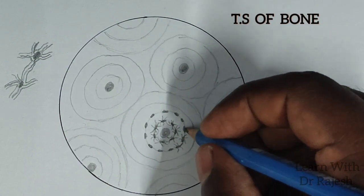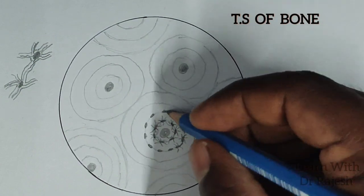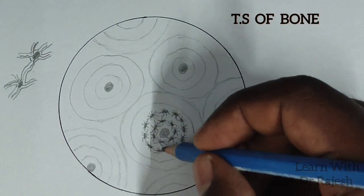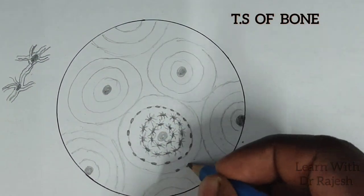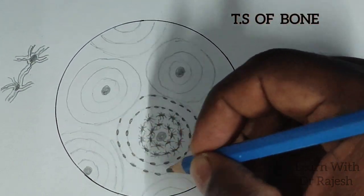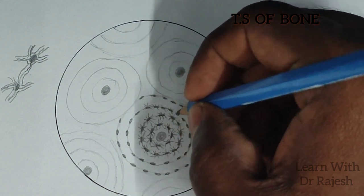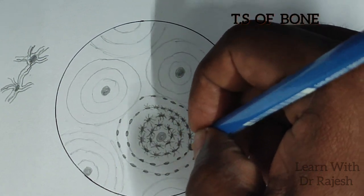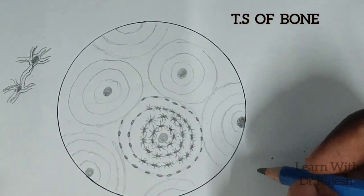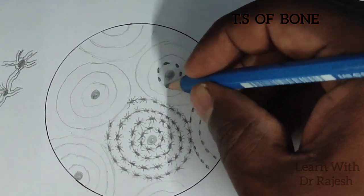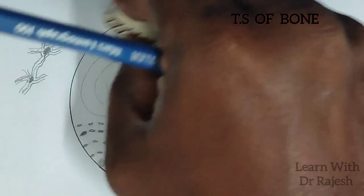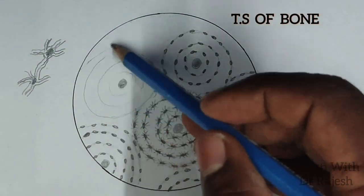Where do these osteocytes come from? All osteocytes are produced by osteoblasts. These osteoblast cells are responsible for the production of osteocytes and what they do is maintain the bone matrix. Osteoblasts mainly help in bone formation, while resorption of old bone is carried out by another type of cell called osteoclasts.